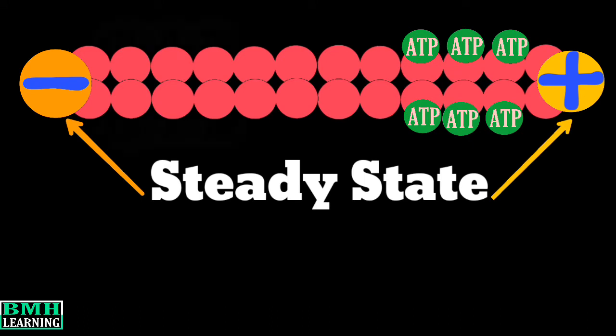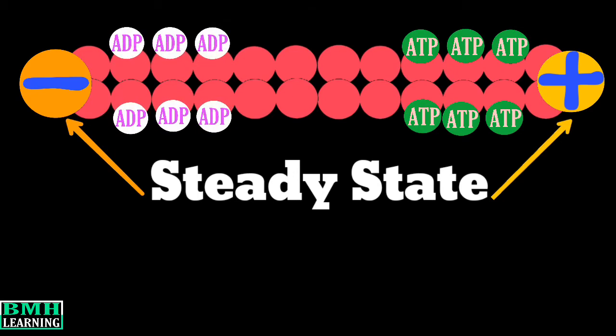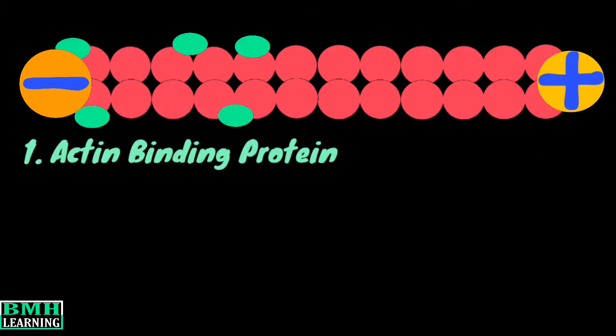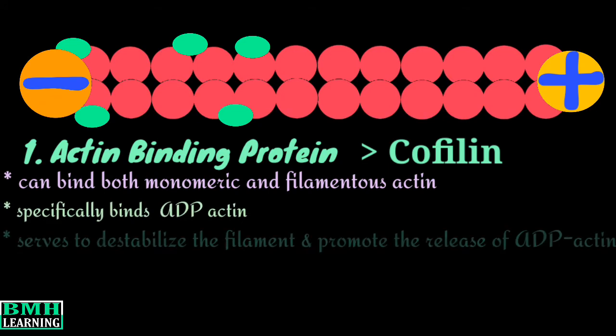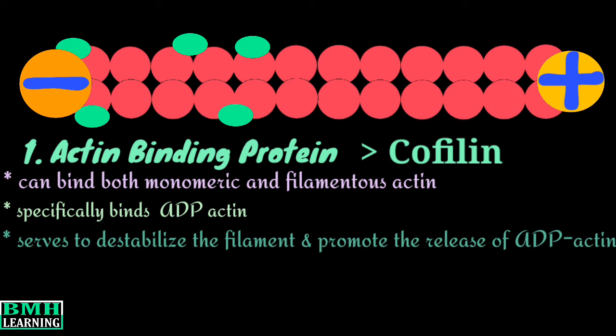The monomers on the plus end are bound to ATP; similarly, the actin units at the minus end are attached with ADP. So we introduce our first actin binding protein: cofilin. It can bind both monomeric and filamentous actin, but specifically it binds to ADP-actin. It serves to destabilize the filament and promote the release of ADP-actin monomers, which is why it's also called actin depolymerization factor.